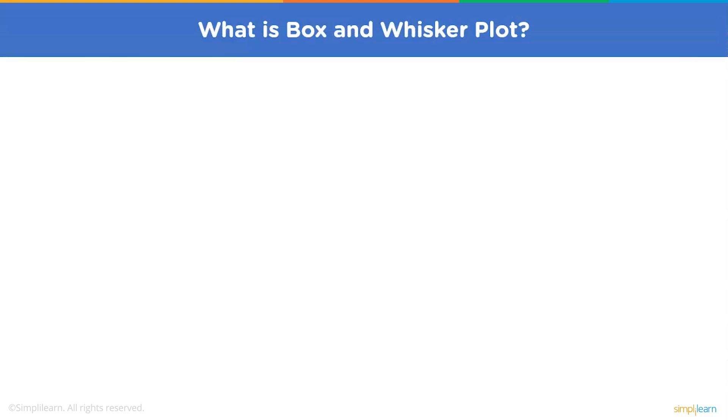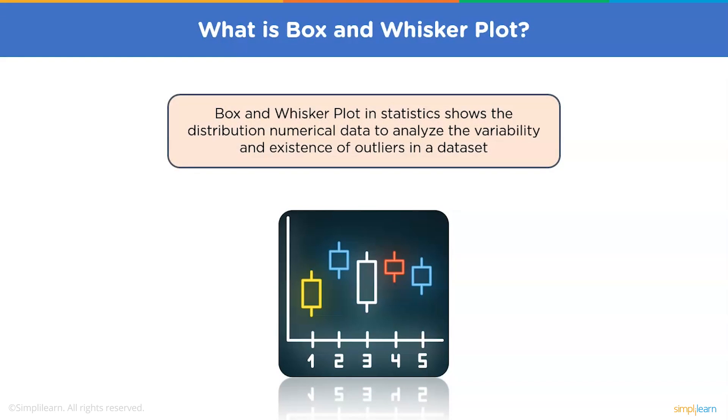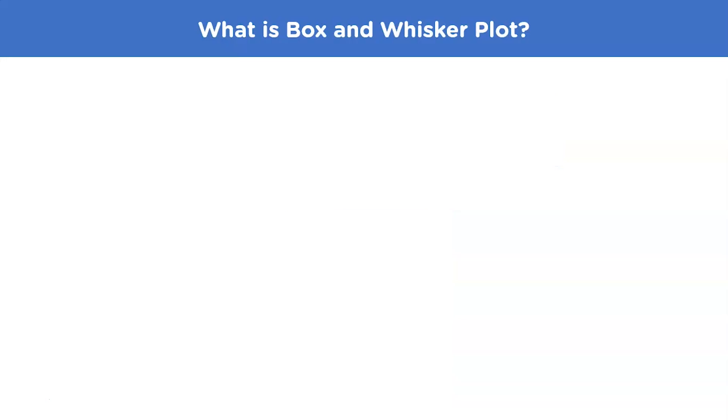So what are box and whisker plots? A box and whisker plot is a graphical representation of variation in a set of data. A histogram analysis is usually sufficient, but a box and whisker plot can add more detail while also allowing multiple sets of data to be displayed in the same graph. Let us understand the terms involved here.